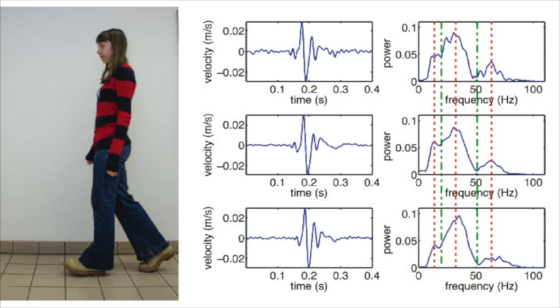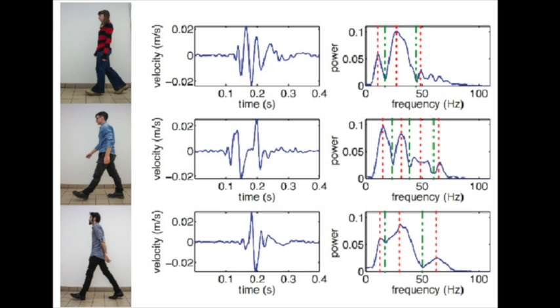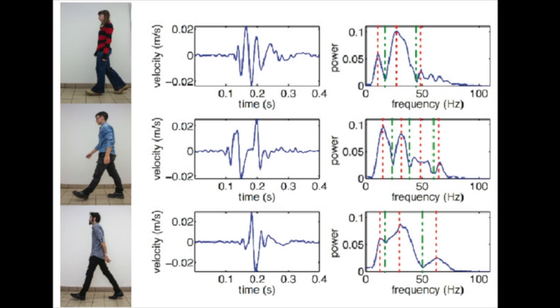In addition, different people induce different floor vibrations, just like your fingerprints. For example, their center of gravity can be different — some people lean back, some people are more straight — and the way their foot strikes the floor is also different. This results in different peaks and valleys in the frequency domain, just as shown in the figures, and we use these characteristics to identify different people.